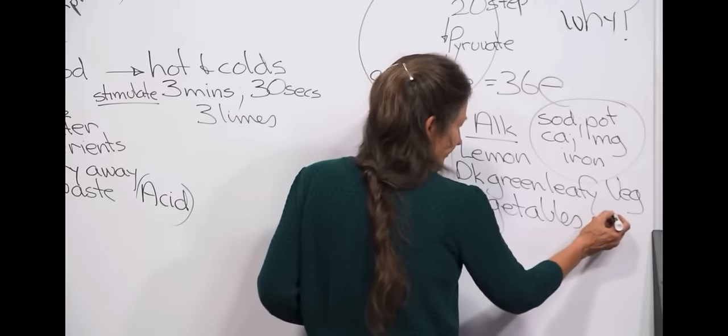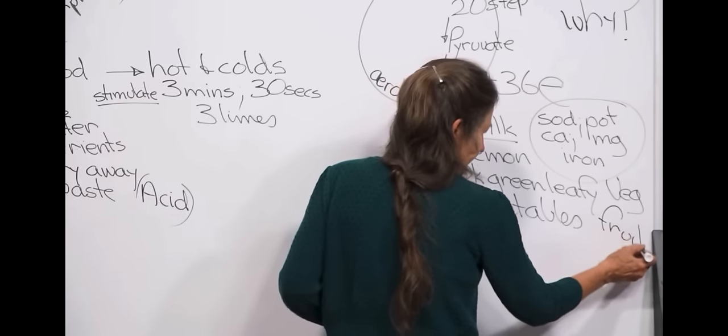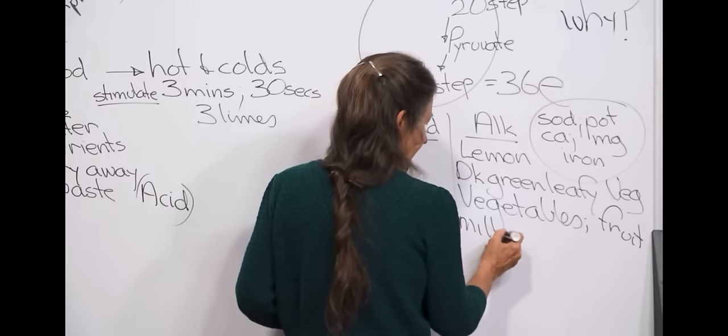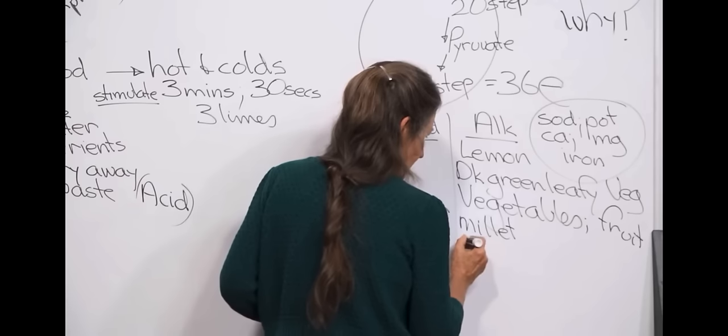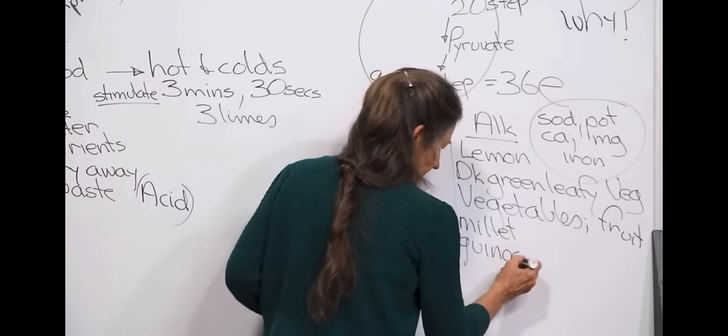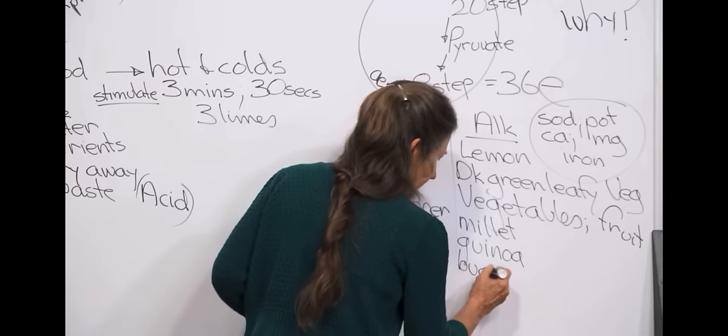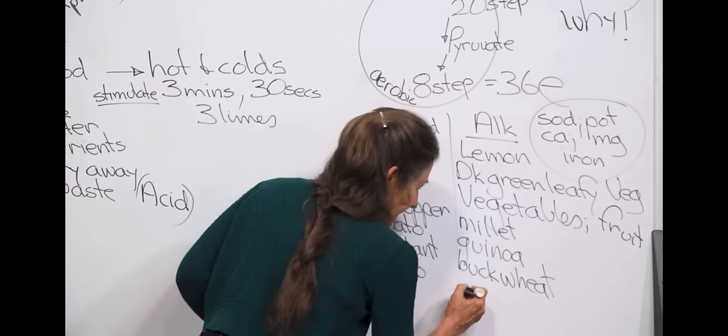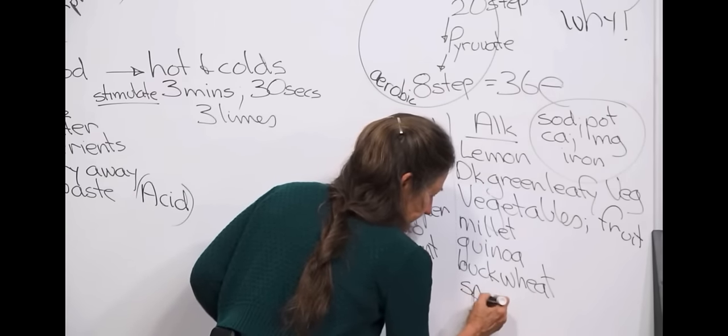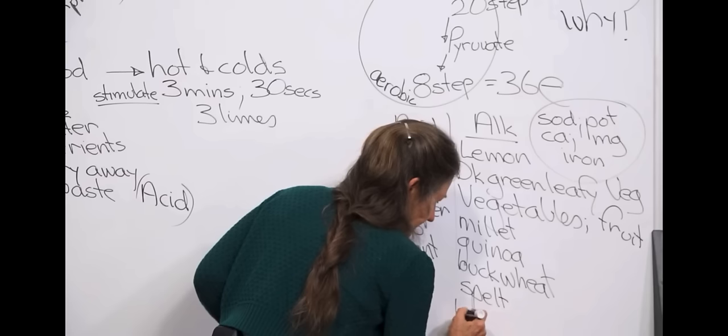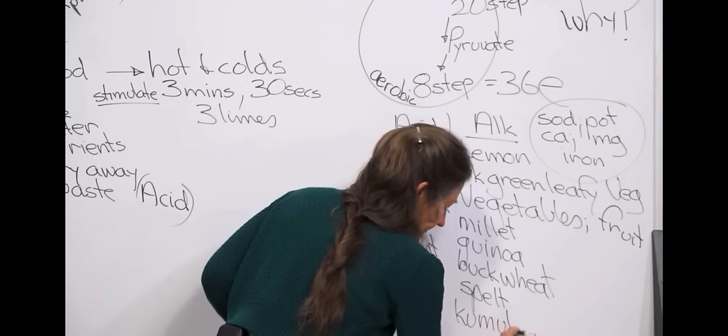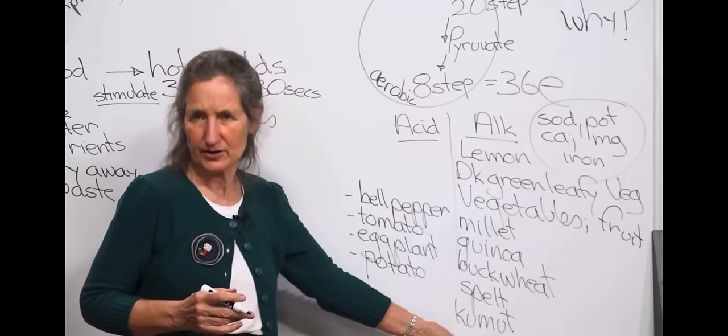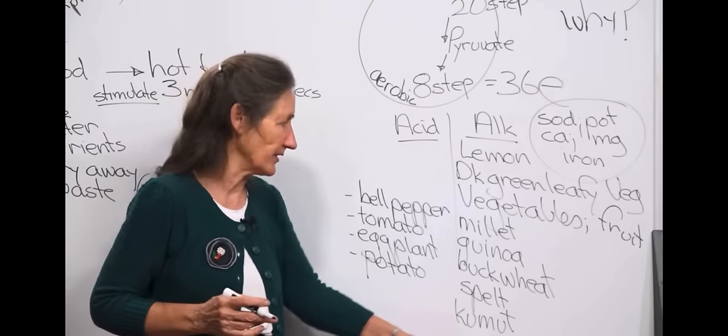Also fruit. Fruit. Fruit is alkalizing. Millet. Millet is an alkaline grain, as is quinoa. As is buckwheat. Buckwheat is also an alkalizing grain. Or an alkaline forming grain. And spelt. And kamut. These are alkalizing grains. There's another one called einkorn. So any of your ancient grains from the ancient wheat have an alkalizing effect.